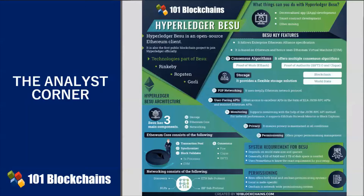Hyperledger Besu also offers proper permission management that activates only nodes that are allowed to participate. Apart from node permissioning, there is also an option of account permissions that enforce more rules and regulations. Accounts permissioning can be used to enforce identity requirements and onboarding, suspend accounts, blacklist broken contracts, and restrict accounts from performing unauthorized activities.